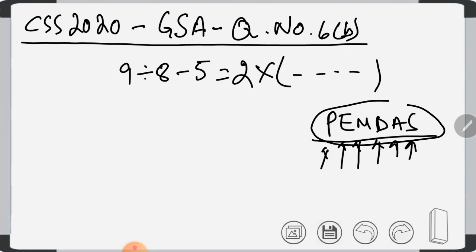Following this rule, division comes first. I assume there is an X, so we write it again: 9-8-5=2X.